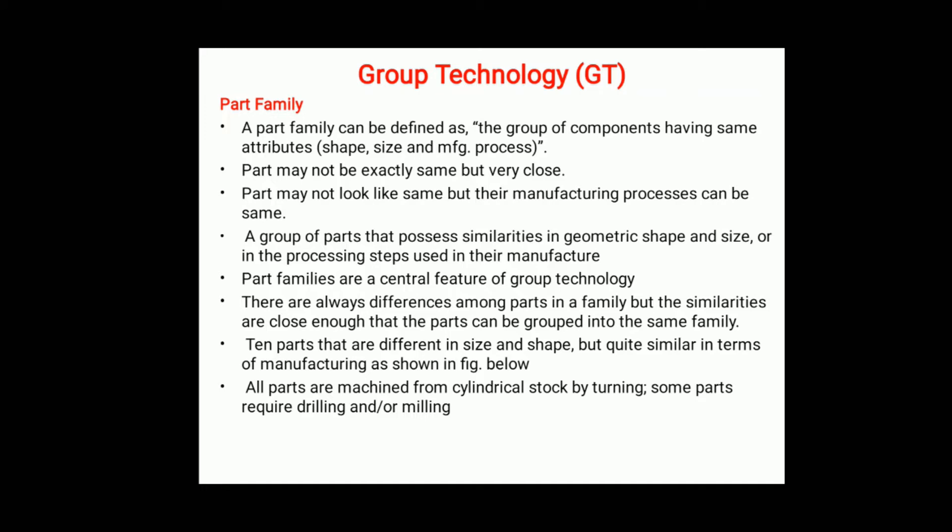A part family is defined as a group of components with the same attributes like shape, size, and manufacturing process. Parts may not be exactly the same but are very close. Parts may not look alike but their manufacturing process can be the same. A part family is a central feature of group technology. There are always differences among parts in a family, but the similarities are close enough that they can be grouped into the same family.